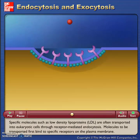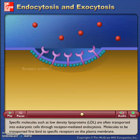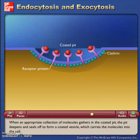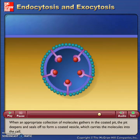Specific molecules, such as low-density lipoproteins (LDL), are often transported into eukaryotic cells through receptor-mediated endocytosis. Molecules to be transported first bind to specific receptors on the plasma membrane. The interior portion of the receptor protein is embedded in the membrane. The protein clathrin coats the inside of the membrane in the area of the pit. When an appropriate collection of molecules gathers in the coated pit, the pit deepens and seals off to form a coated vesicle, which carries the molecules into the cell.